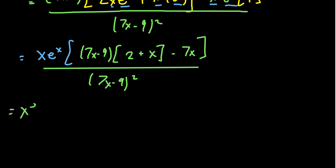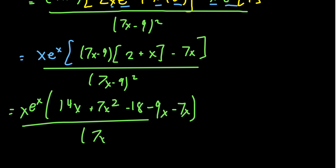To do that, we're going to take the 7x minus 9 and foil it with the 2 plus x. So that will give us a 14x plus 7x squared minus 18 minus 9x. There's also a negative 7x in the numerator. So let's combine like terms.